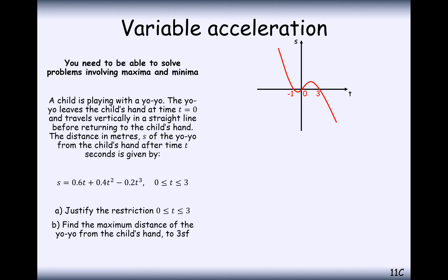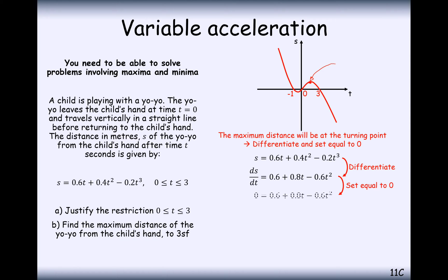Part B then finds the maximum distance of the yo-yo from the child's hand. And now the maximum distance is when our graph is reached this point here. So that's effectively a maximum point. So you can link it back to what you learnt in A-level maths. When you looked at maximum point problems, you looked at your differential and set that equal to 0. And that's what we're going to do here. We're going to set the differential of this equal to 0, or in other words, the velocity equal to 0.